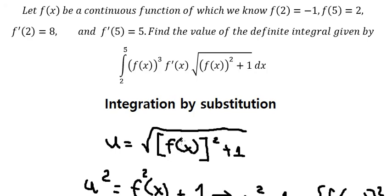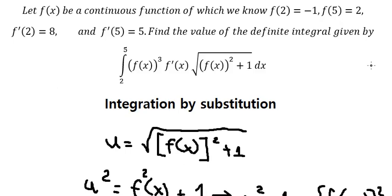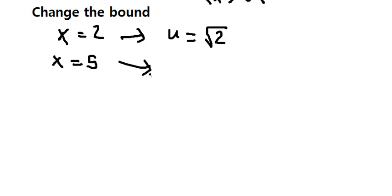Now we need to change the bounds. When x equals 2, we evaluate f(2) = -1, so 1 + 1 gives us 2, and u equals the square root of 2. When x equals 5, f(5) = 2, so 2² = 4, and 4 + 1 = 5, giving u equals the square root of 5.